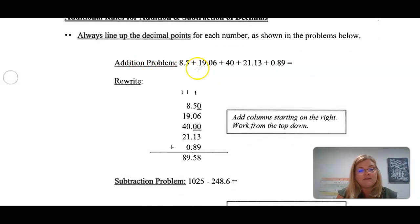It's written out 8.5 + 19.06 + 40 + 21.13 + 0.89 equals. The first step that we want to do is rewrite it so that we can line up those decimals. Here's where we just talked about the zeros being the placeholders. You can see 8.5, but in order to line this up nice and tidy so that you are absolutely sure that you are adding or subtracting in the right columns, you add that zero there.